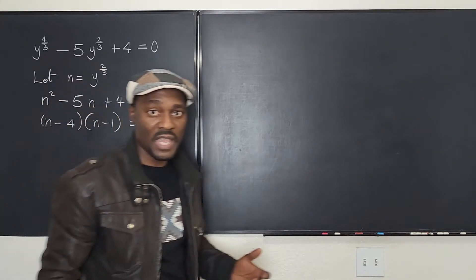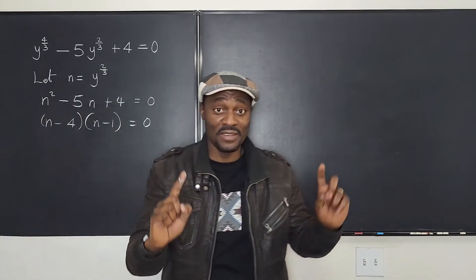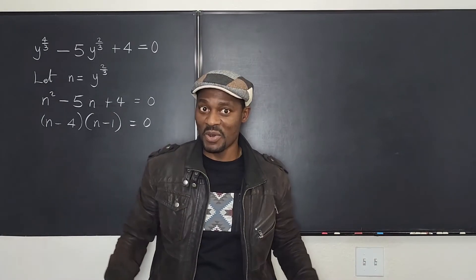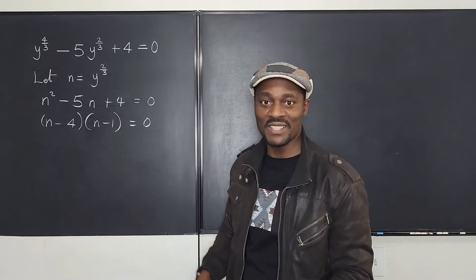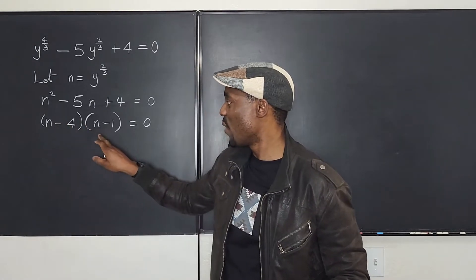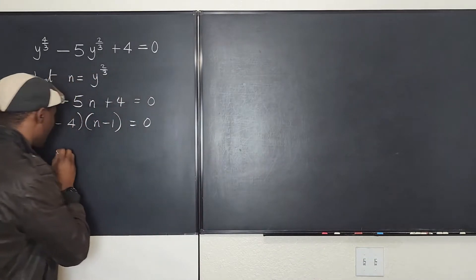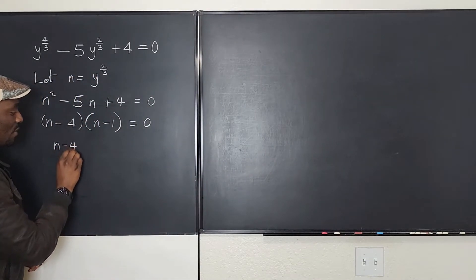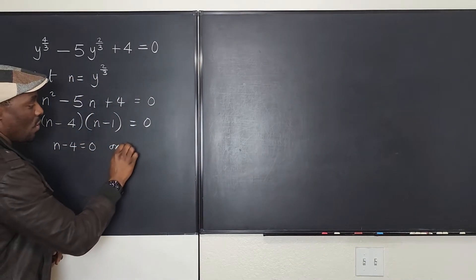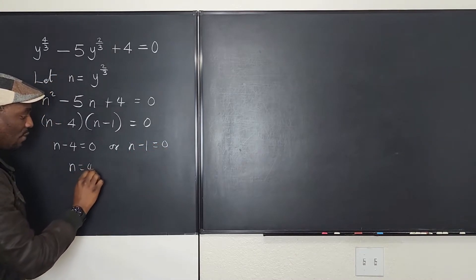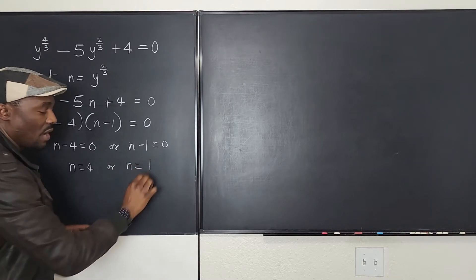The zero product property says when you multiply two things together and you get a zero, it means one of them is a zero or both of them are zeros. That's the only way you're going to get a zero on this side. This must be zero or this must be zero or both of them are zeros. So that's what we use to solve this and we go n minus 4 must be equal to zero or n minus 1 equals zero. So we get n equals 4 or n equals 1.